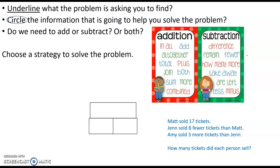Here's a word problem for you. Matt sold 17 tickets. Jen sold 8 fewer tickets than Matt. Amy sold 3 more tickets than Jen. How many tickets did each person sell? I want you to take a look at that problem and tell somebody in the room what we're trying to find. We are trying to find how many tickets each person sold.